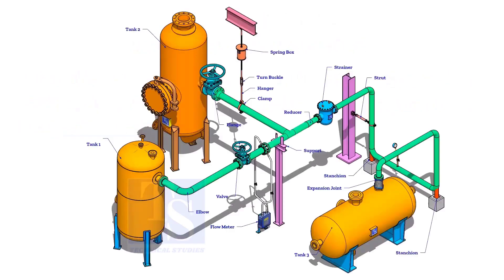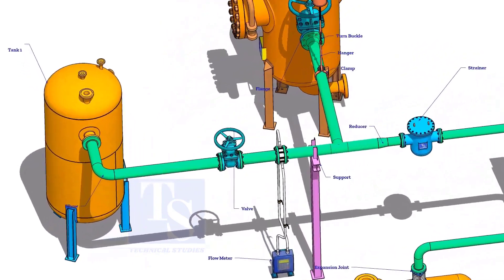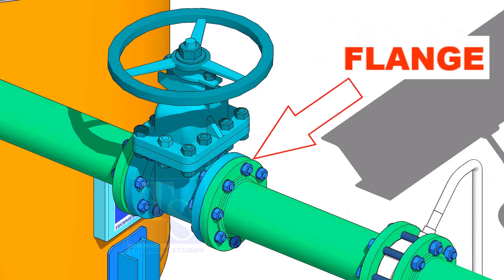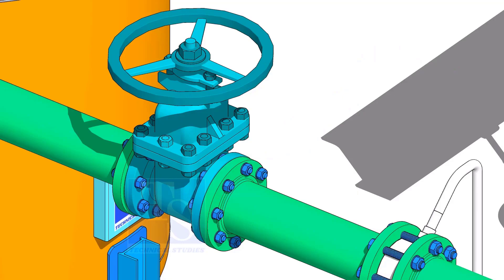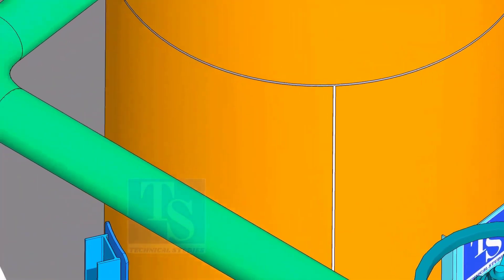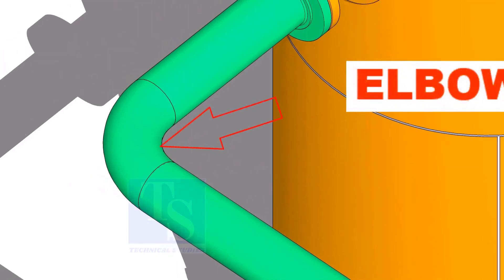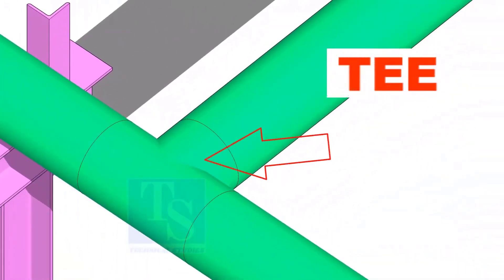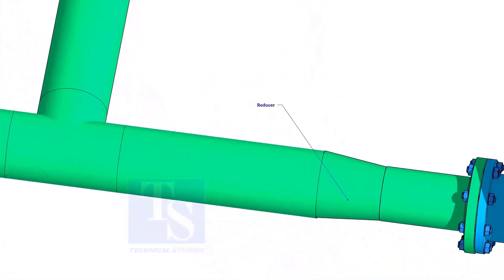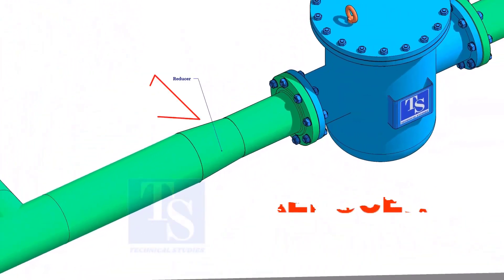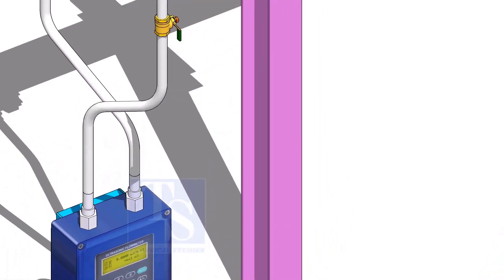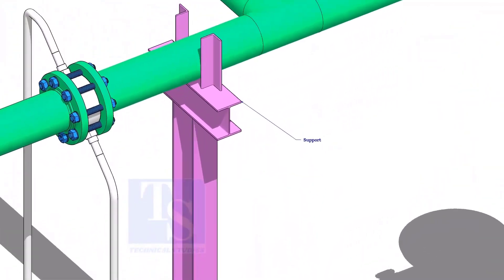Let us have a look at some important piping components: Valve. Flange. Elbow. Tee. Reducer. Flow meter.